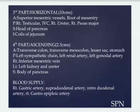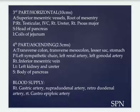The fourth part, D4, ascending, is about 2.5 centimeters long. Anteriorly: transverse colon and transverse mesocolon, lesser sac of the stomach. Posteriorly: left sympathetic chain, left renal artery, and left gonadal artery. On the left side: left kidney and left ureter. Superiorly: body of pancreas.